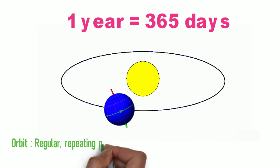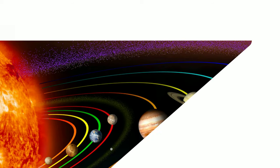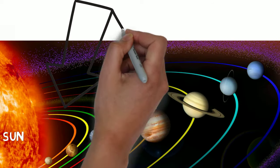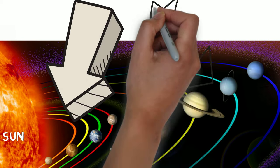An orbit is a regular repeating path that one object in space takes around another one. The number of days in a year on any planet depends on where the planet is orbiting. Planets that are closer to the Sun will take a shorter time to orbit it than those farther away.